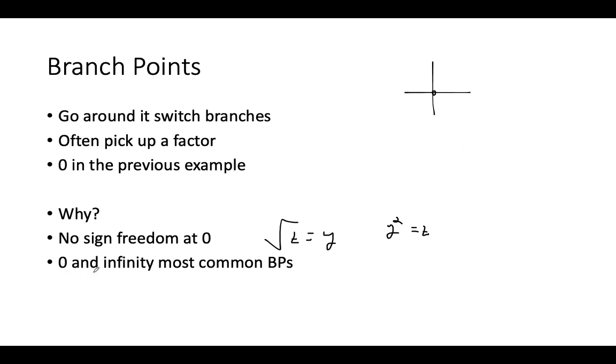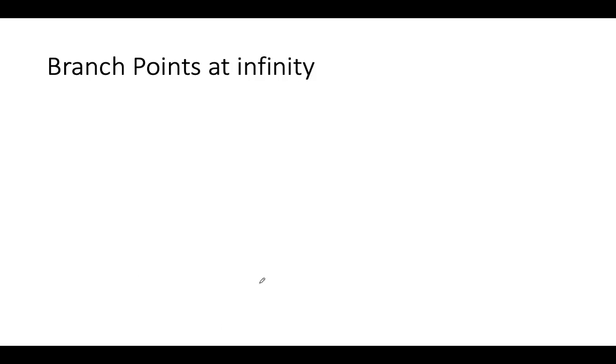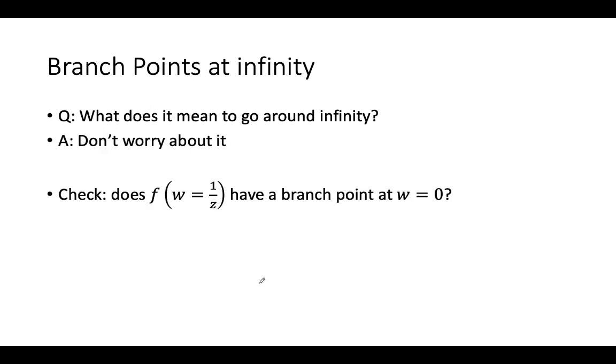So 0 and infinity are the most common branch points. For a branch point at infinity, we go around branch points to switch branches. So what does it mean to go around infinity? The answer is just don't worry about it.